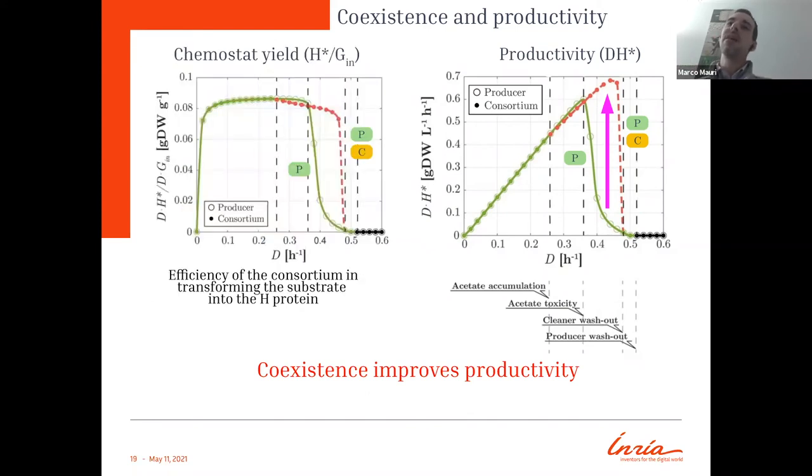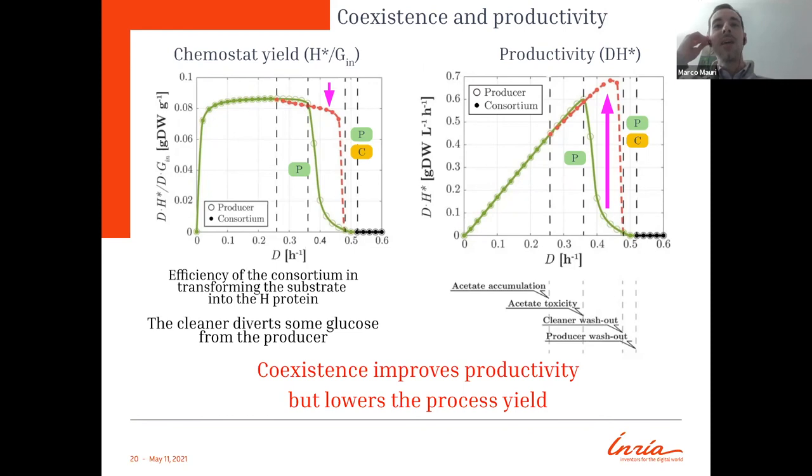If you check the yield of the chemostat, basically how much glucose goes in production of the H protein, or the efficiency of the consortium in transforming the substrate into H protein, you see that comparing again the case of sole producer, this one with open dots, and the case of the consortium, this one with filled dots, the consortium decreases the productivity by increasing the dilution rate. And this happens because the cleaner actually is able to divert some nutrients, some glucose from the producer, and in this way lowers down the possibility of transforming all the glucose into H proteins.